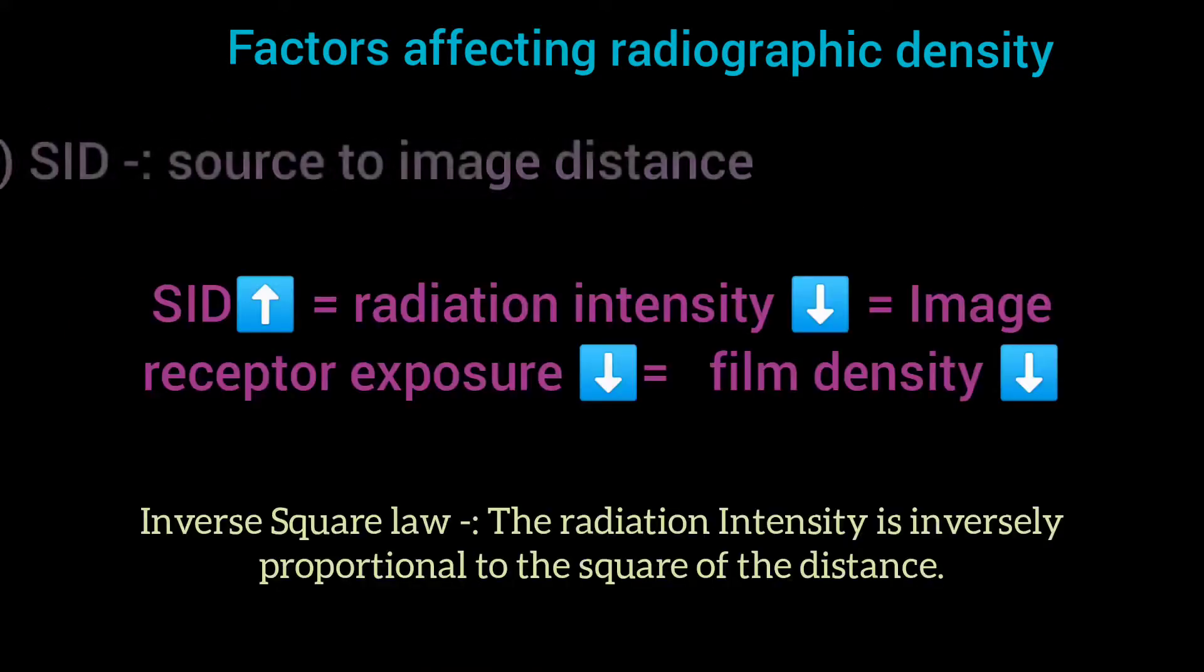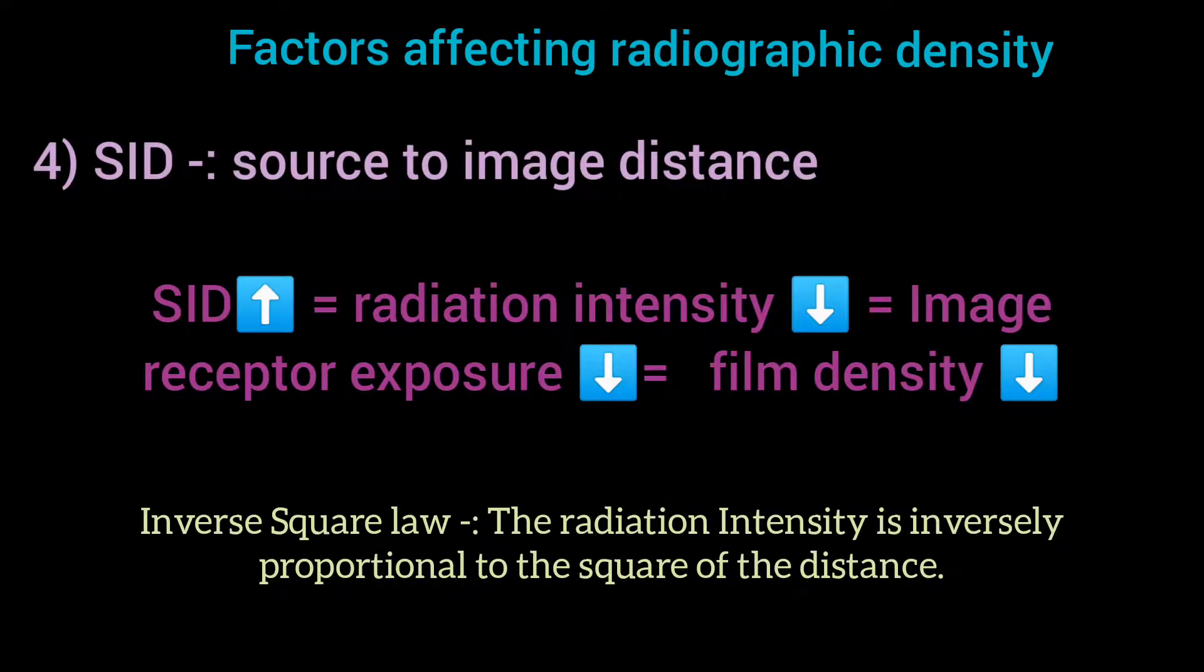As we increase the SID, the intensity of the X-ray beam decreases because of inverse square law, leading to decreased image receptor exposure. This will result in decreased film density.